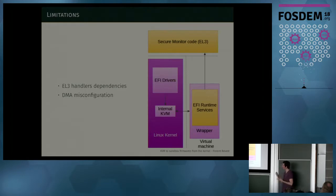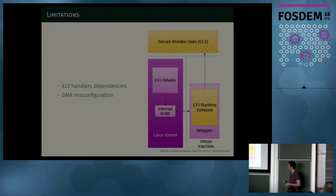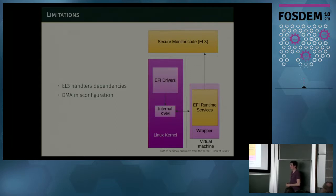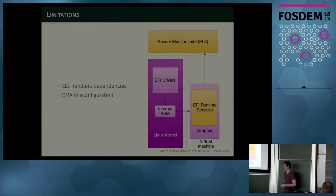One more way for the firmware to screw you: a user reported that his machine would randomly crash. What happened was that when he called the EFI runtime services, they would enable DMA transfers, and then the device would write Ethernet frames at random locations inside memory — overwriting your kernel. Obviously that's quite complex to debug. Sandboxing EFI runtime services is useful, but if in the virtual machine you map access to devices, they can configure them wrongly and still do things behind your back.